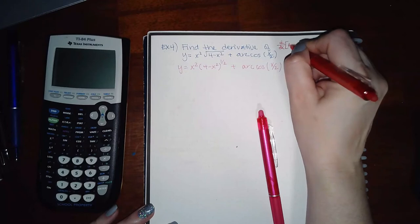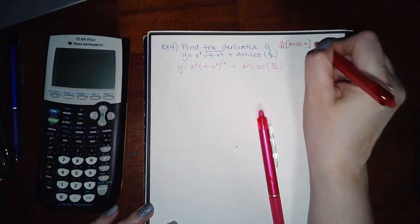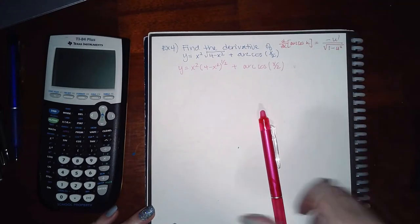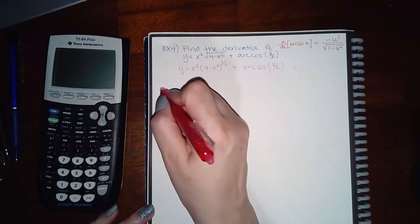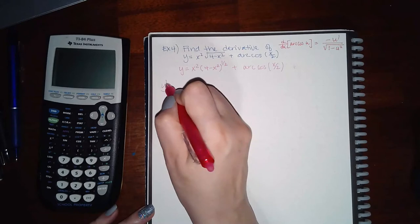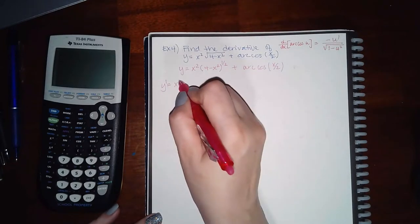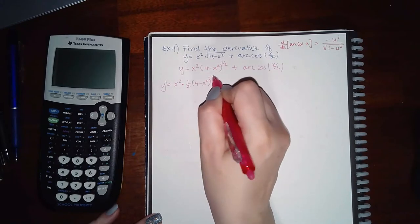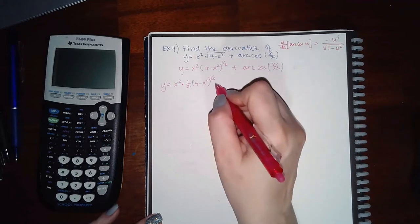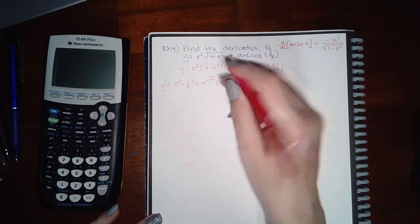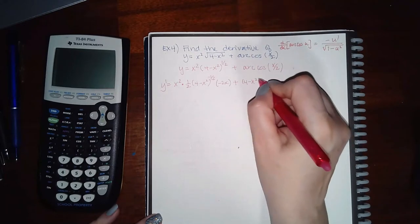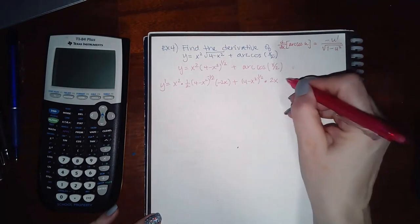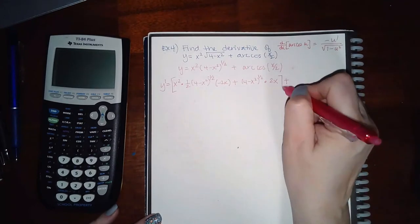The rule I need here is that d/dx of arccos(u) equals negative u' over the square root of 1 minus u squared. But first, let's handle the first term because it requires the product rule: the first factor times the derivative of the second factor using the power rule — and since it's not just x I apply the chain rule — plus the second factor times the derivative of the first factor, which is 2x.